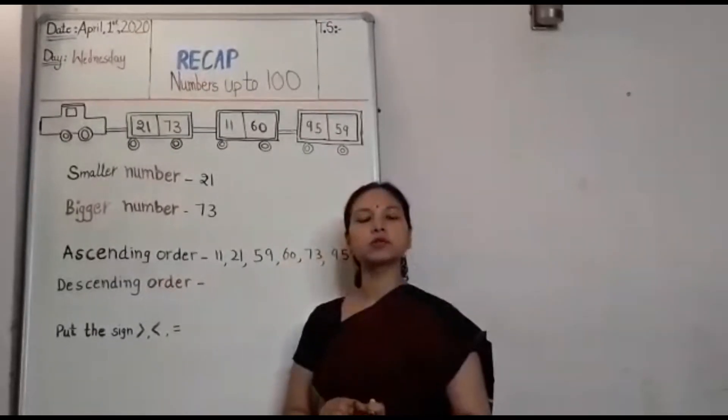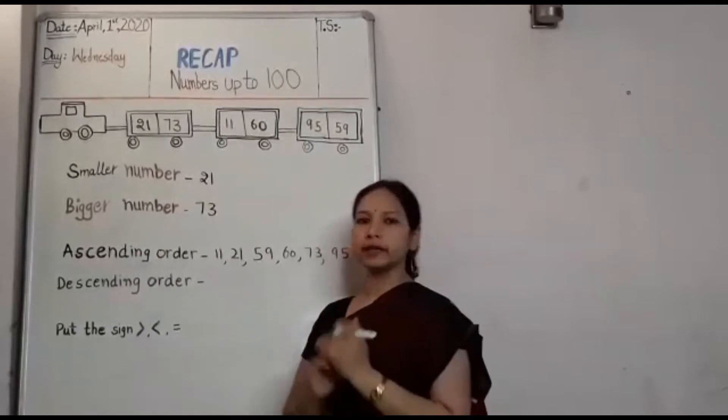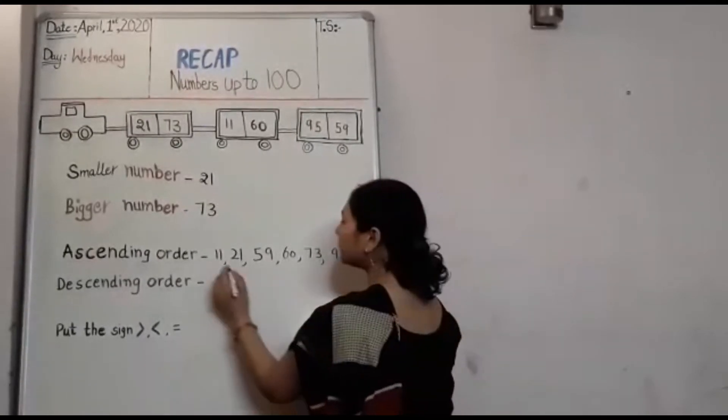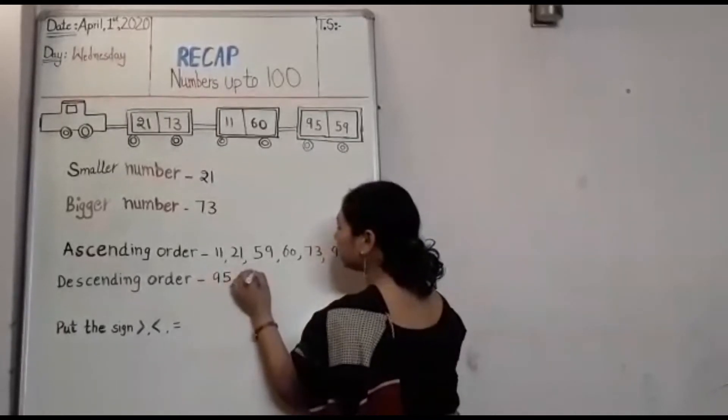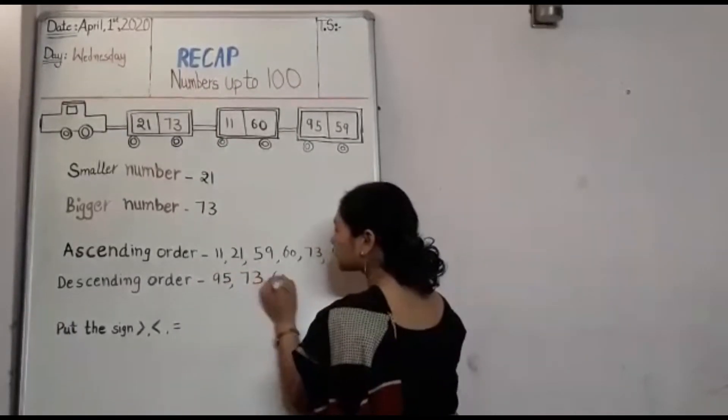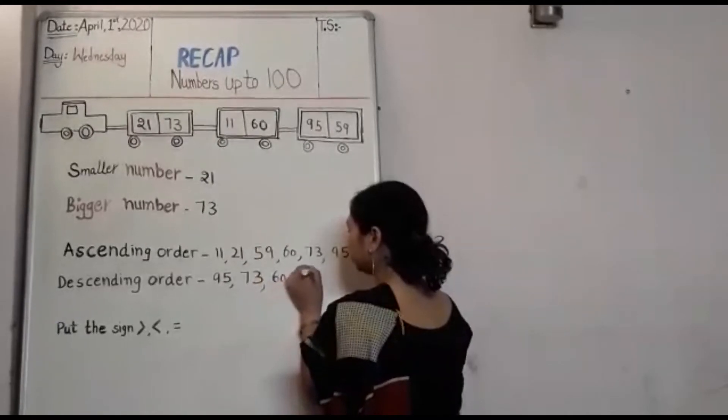Descending order mein hum numbers ko big to small arrange karte hain. Sabse bada number 95, then 73, then 60.